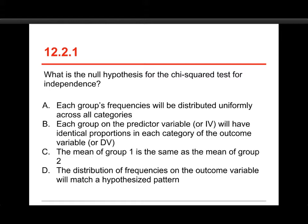Or C, the mean of group 1 is the same as the mean of group 2, or D, the distribution of frequencies on the outcome variable will match a hypothesized pattern. Well, we're looking at the chi-squared test for independence, which means we have two categorical variables. One is being used as a predictor of the second, and so the long one here is in fact the correct answer in this case.